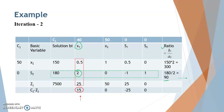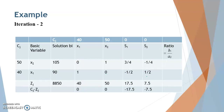Repeat the improvement process: substitute X1 in place of S2 and enter its objective function coefficient of 40. Divide the entire key row by the key element 2, giving 90 for the Bi element. Use the formula for remaining rows to find the updated values. Calculate the new Zj values: for example, 15 × 105 plus 14 × 90, and for the next column 15 × 0 plus 14 × 1. Then compute the updated Cj minus Zj row.